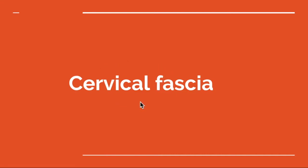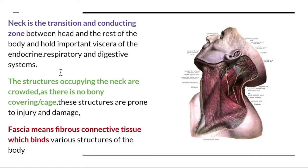Let's start talking about the cervical fascia. The cervical fascia literally means the fascia that surrounds the neck. The neck is the transition and conducting zone between the head and the rest of the body, and holds important structures of the endocrine, respiratory, and digestive systems. These structures occupying the neck are crowded, as there is no bony covering or cage, and are prone to injury and damage.